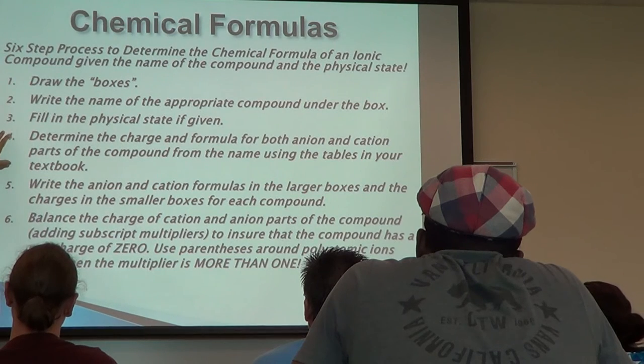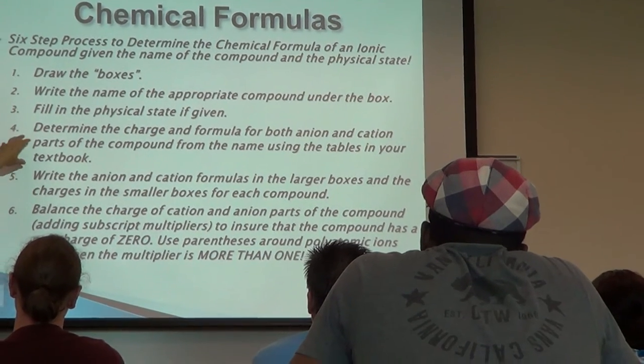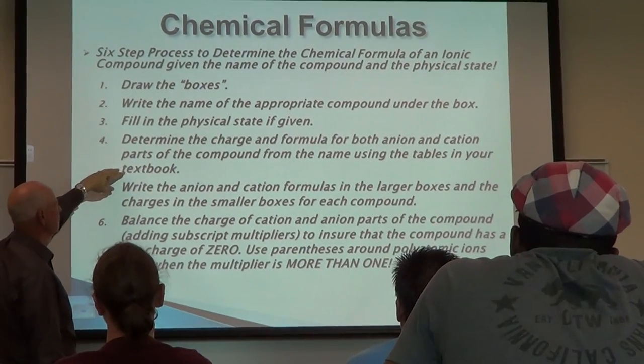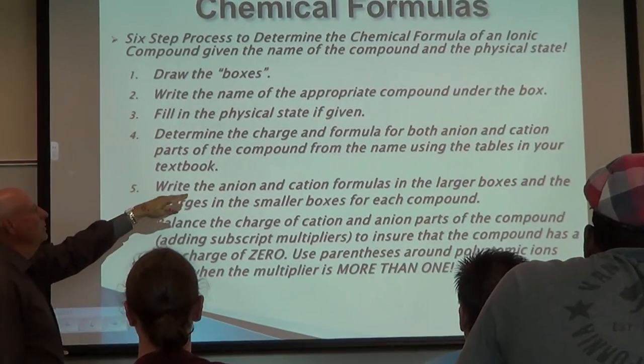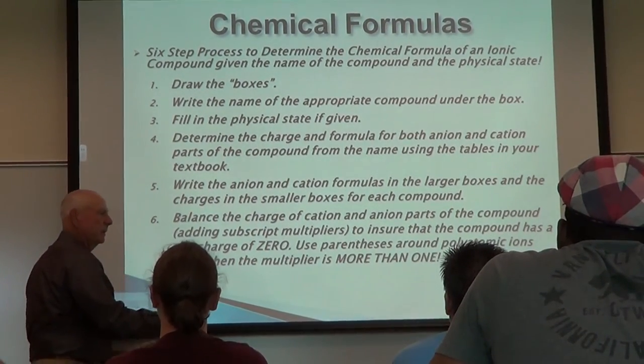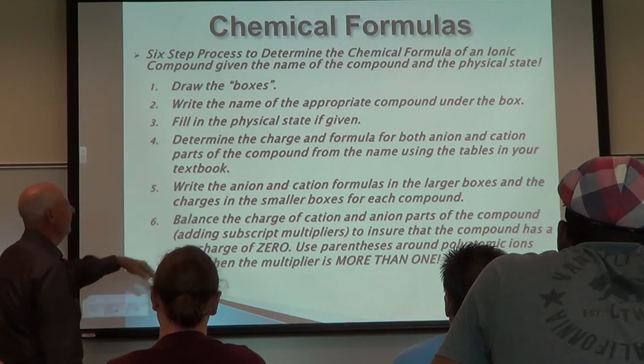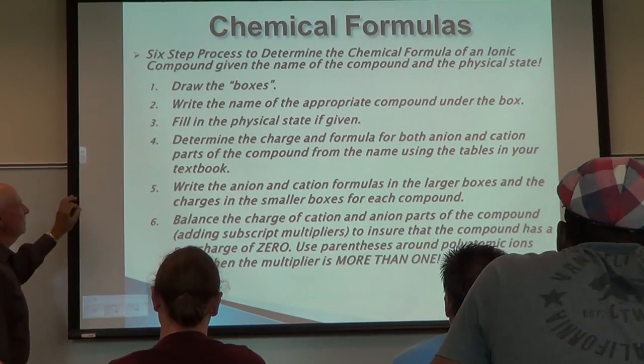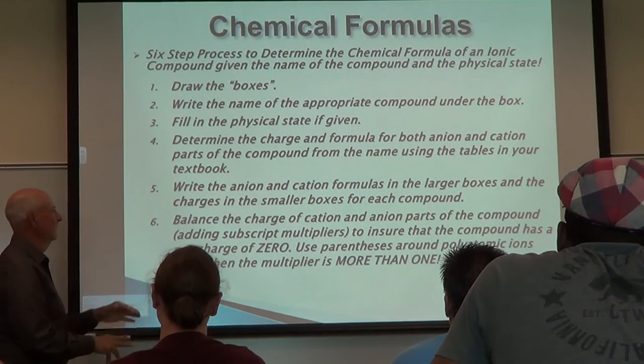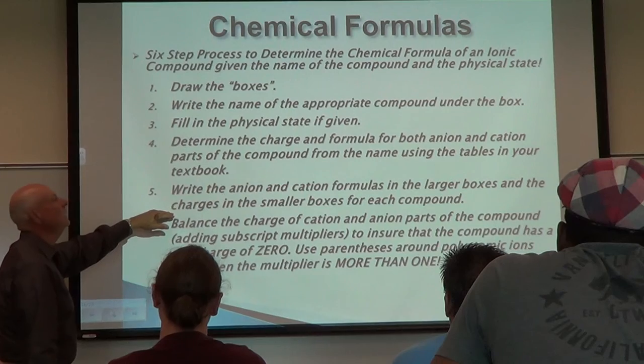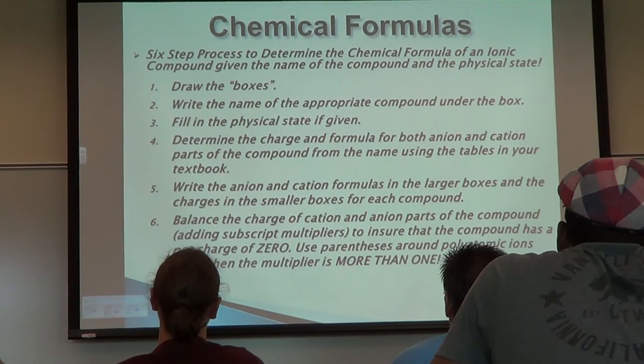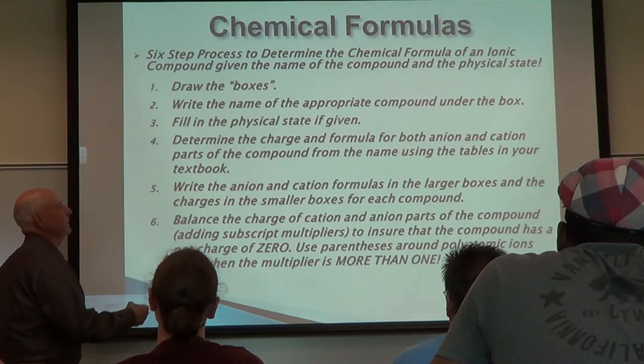Four, go to the inside back cover of your book, to the tables, and determine the symbol and the charge for each of the pieces, for the anion piece and the cation piece. Five, write those formulas in the big box and write the charges in the small box for each compound, just the way it is in the book. So so far, we've done five of the six steps. All we've done is draw some boxes, read some stuff, and copy that stuff. So reading and copying, first five steps. I'm confident that everybody in this room is totally capable of doing that repetitively. Please don't prove me wrong.